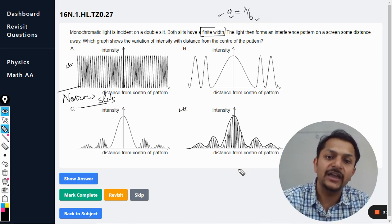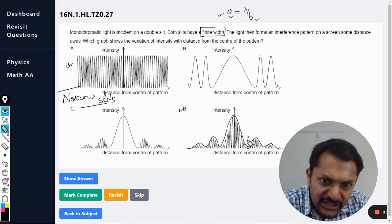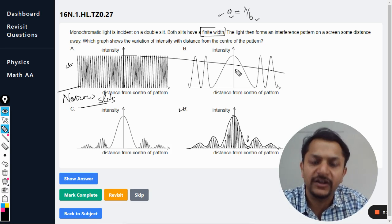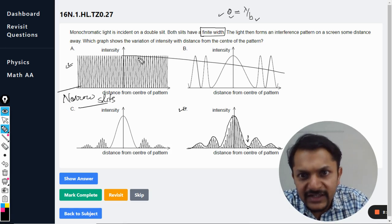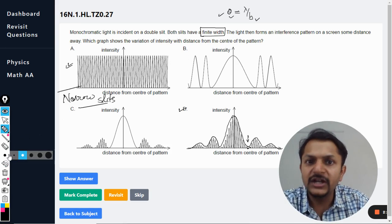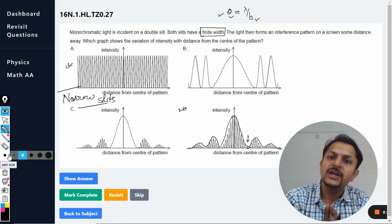If b is really very less, theta becomes really very high. So this point at which the dip is there, that point is really very far away. That is why it gives you a feeling that the amplitude is not decreasing considerably.